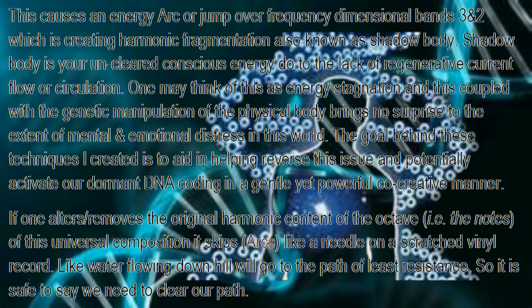This is known as being shadow body. Shadow body is your uncleared consciousness energy due to the lack of regenerative current flow or circulation — one may think of this as an energy stagnation. This, coupled with the genetic manipulation of the physical body, brings no surprise to the extent of mental and emotional distress in this world. When we're looking at dimension bands three and two, this is the mental body and the emotional body. These techniques are evolutionary — they can continue to develop — and the goal behind them is to help reverse this issue and potentially activate our dormant DNA coding in a gentle yet powerful co-creative manner.